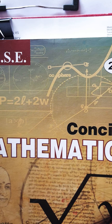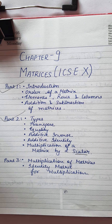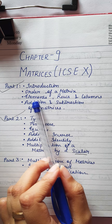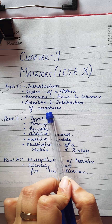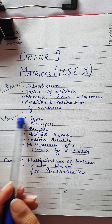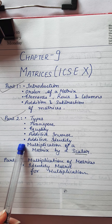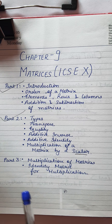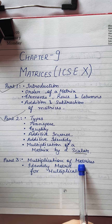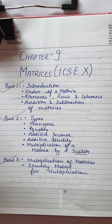Hello everyone. We had started with ICSE Class 10th Chapter 9, Matrices. In the previous videos we studied introduction, order, elements, rows and columns, addition and subtraction and their compatibility. In the second part we studied types, transpose, equality, additive inverse, identity, and multiplication with a scalar. Now in this video we are going to study multiplication of two matrices and identity matrix for multiplication.